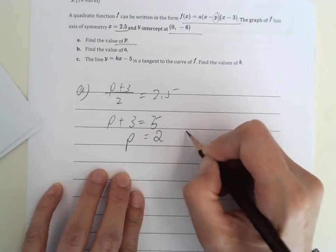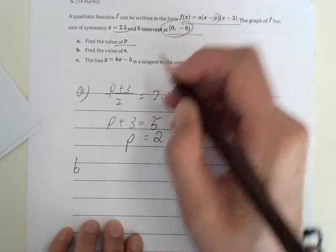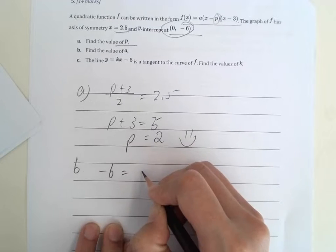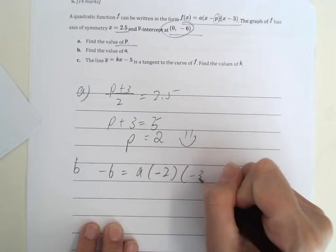So P would be equals to 2. And then we need to find the value of A. We got another point here. So we have negative 6 equals to A times negative 2 times negative 3.